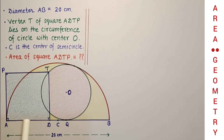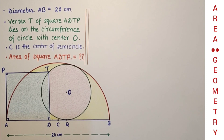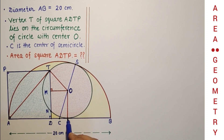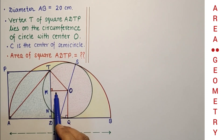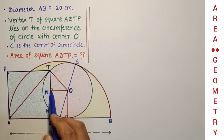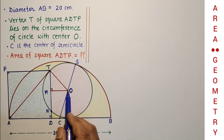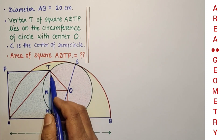After some necessary constructions, the diagram will look like this. The constructions are: OQ is joined, and OQ is perpendicular to AB because Q is the point of contact — radius and tangent at the point of contact are mutually perpendicular. OM is drawn perpendicular to side TD. Let us suppose TD intersects the circle at point N. OM is perpendicular, and a perpendicular drawn to a chord bisects it, so TM equals MN.